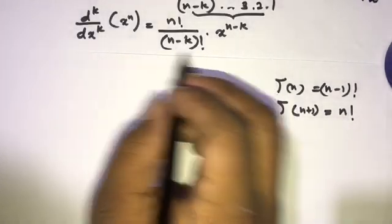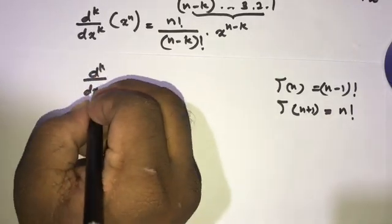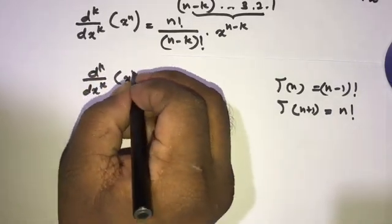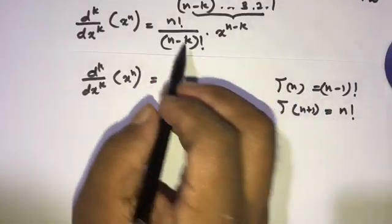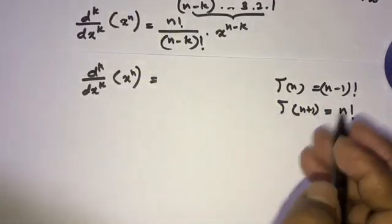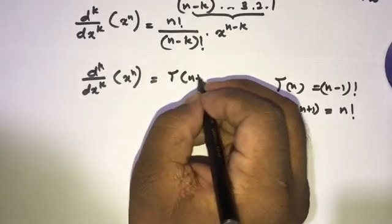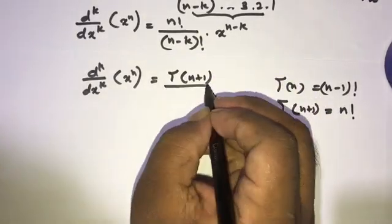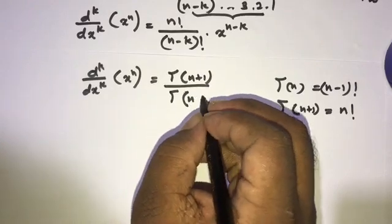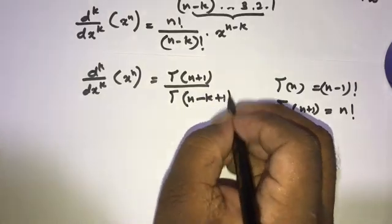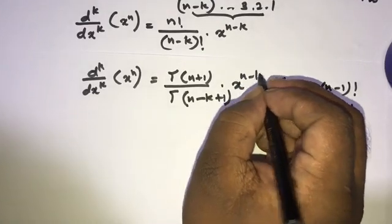We can now rewrite this equation using the gamma function. The kth derivative of x to the n equals gamma of (n plus 1) over gamma of (n minus k plus 1), times x to the n minus k power.